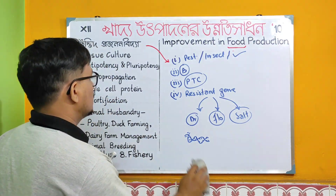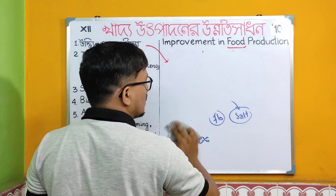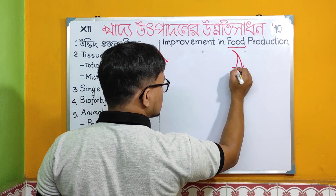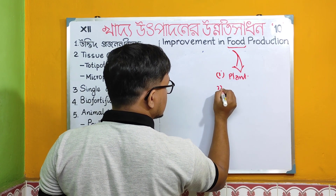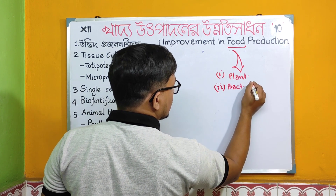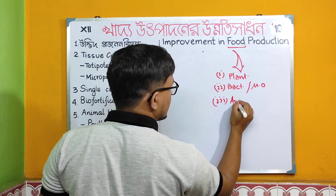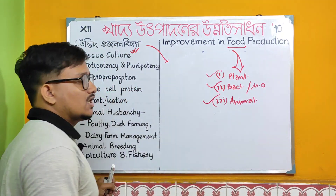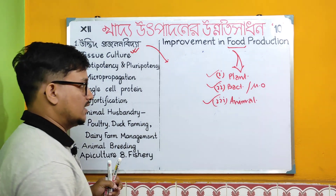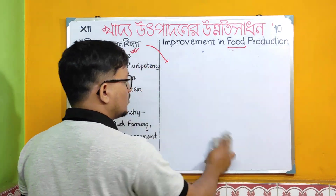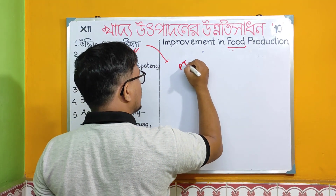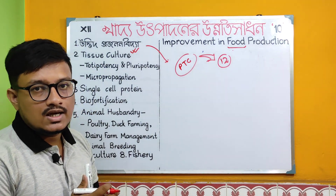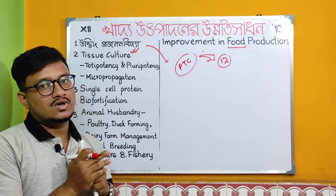The first unit covers culture. The second unit covers the plant section — plant tissue culture. Plant tissue culture is about food production improvement. The chapter covers plant system, then bacteria or microorganism system, then animal section. Plant tissue culture is already covered in Chapter 12 on Biotechnology and its Application.